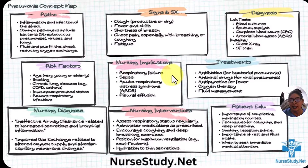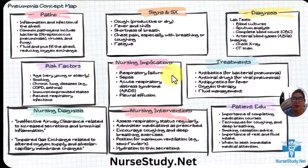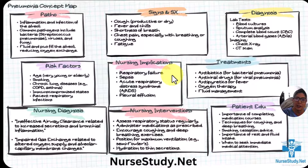For nursing implications, these are things we need to look for: respiratory failure, potential for sepsis, acute respiratory distress syndrome — also known as ARDS — and pleural effusions. I will be doing videos on all of these topics as well, with test questions and concept maps.